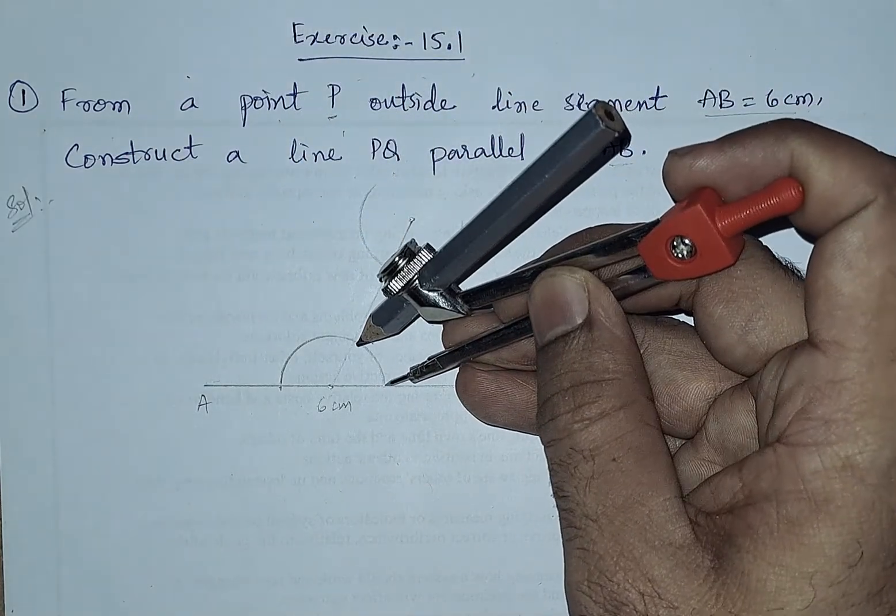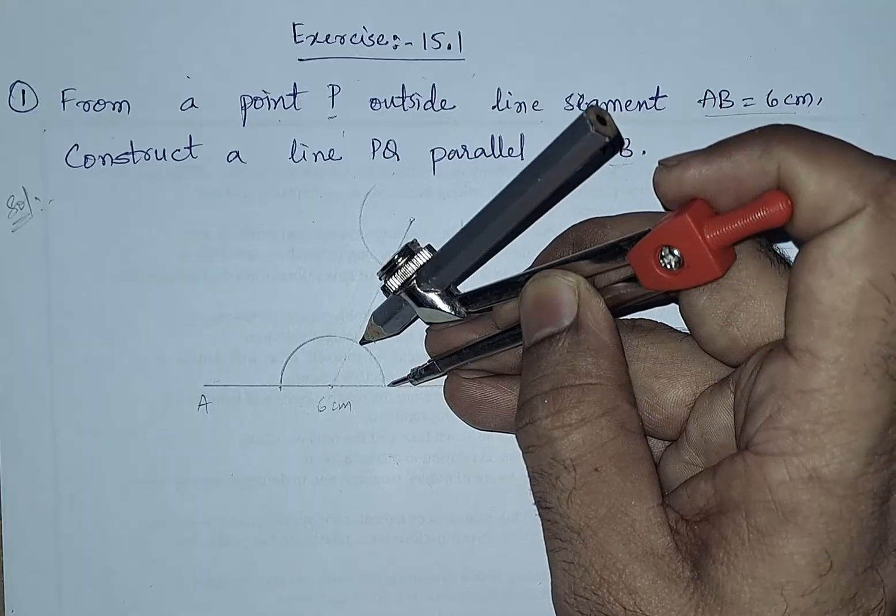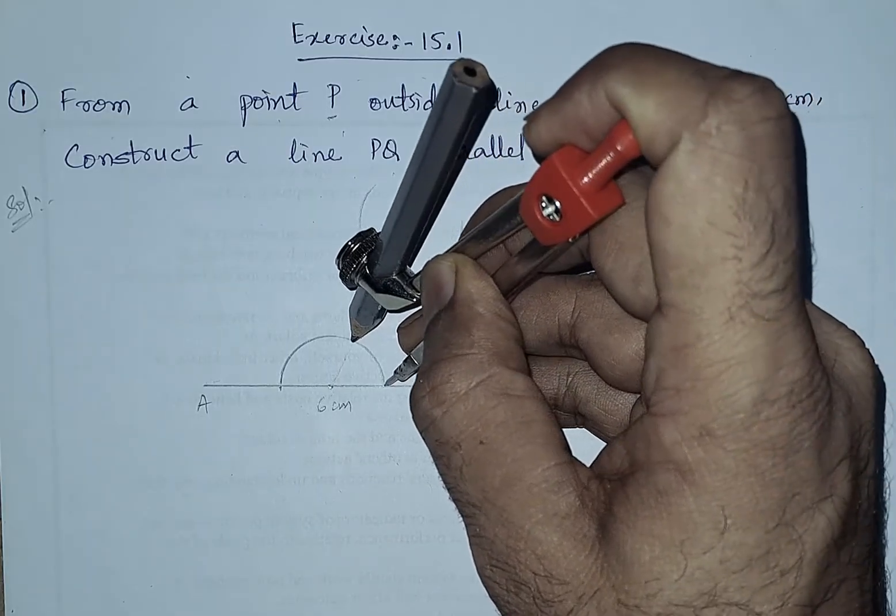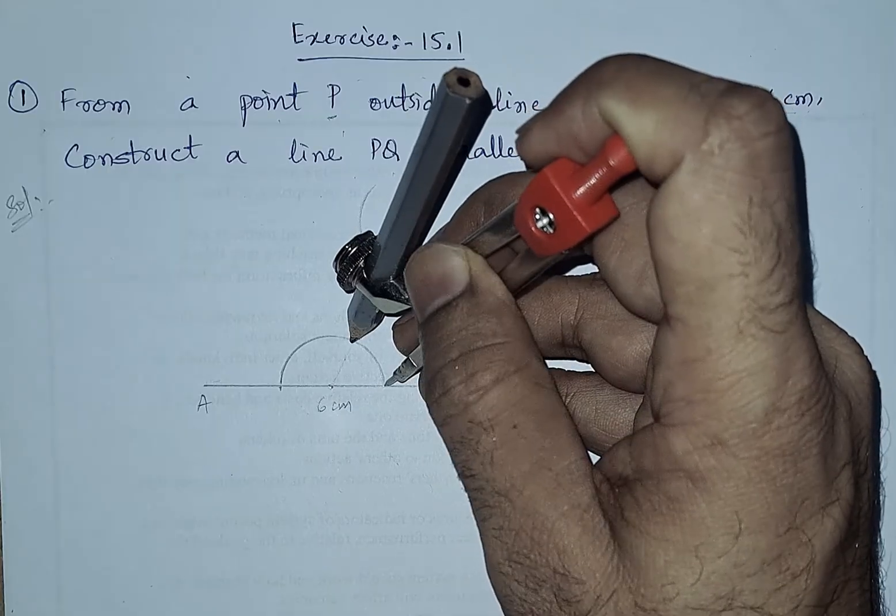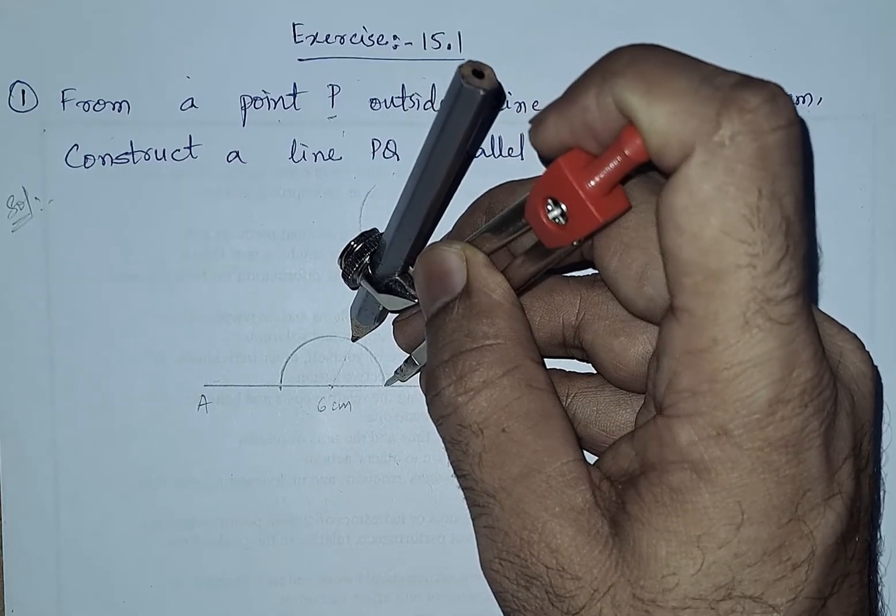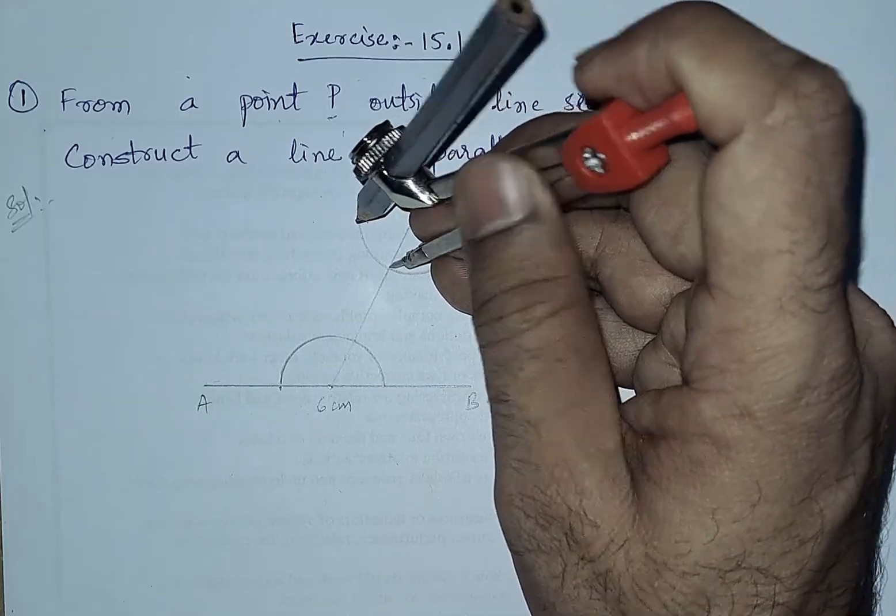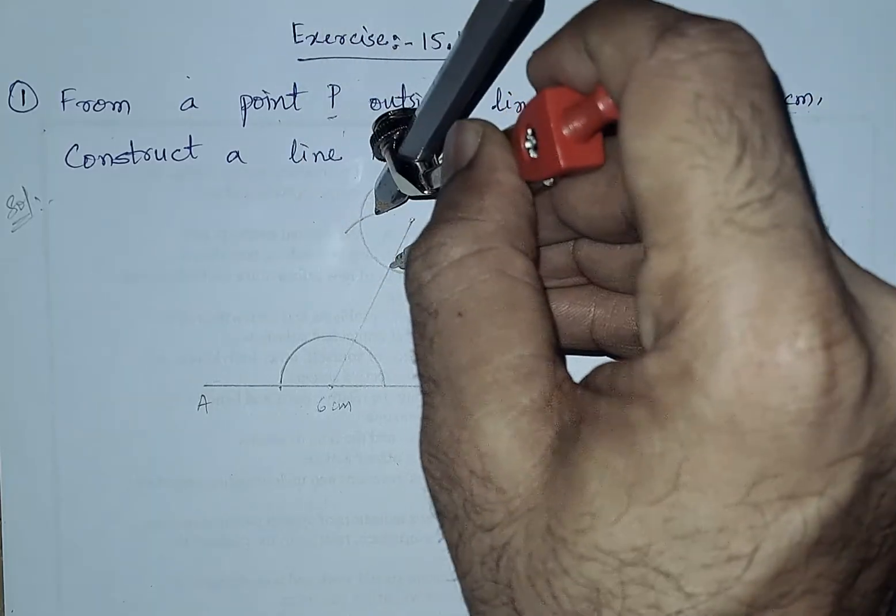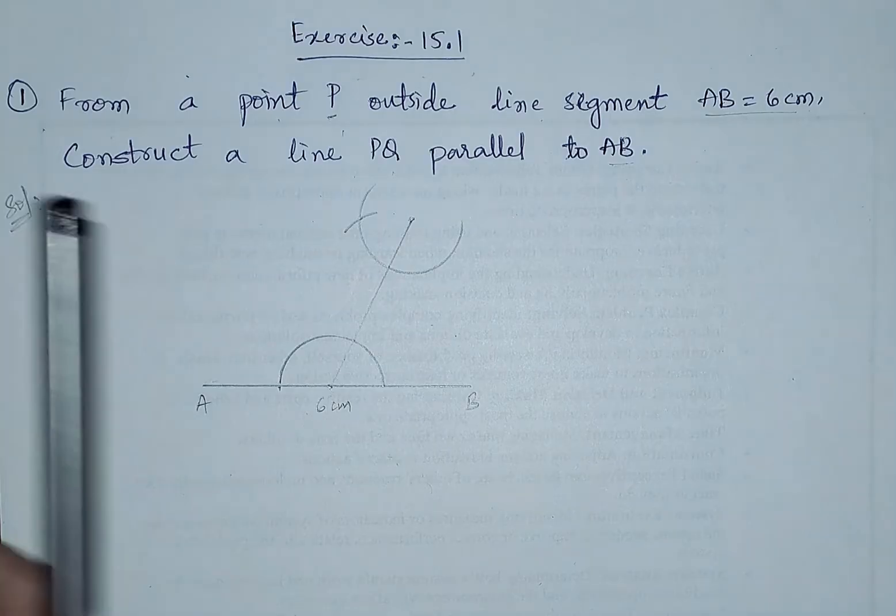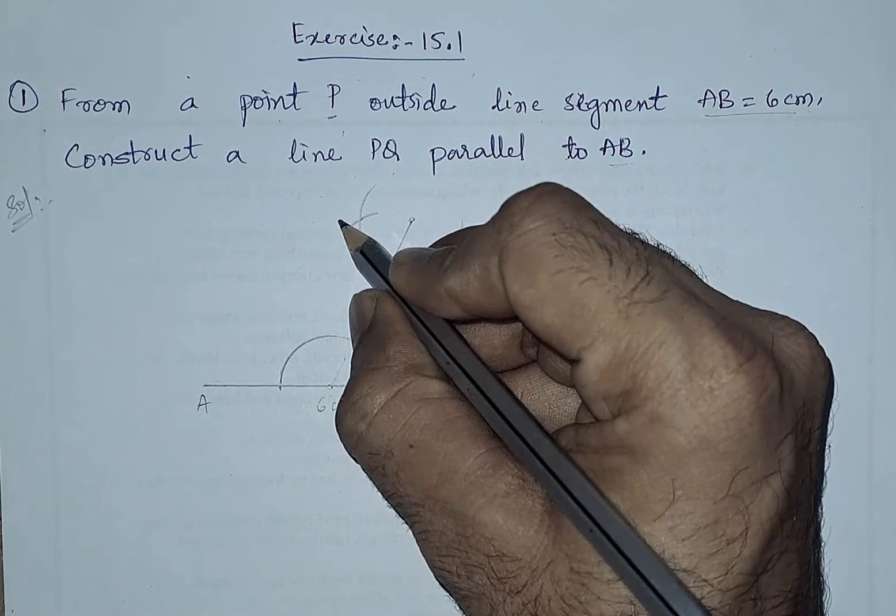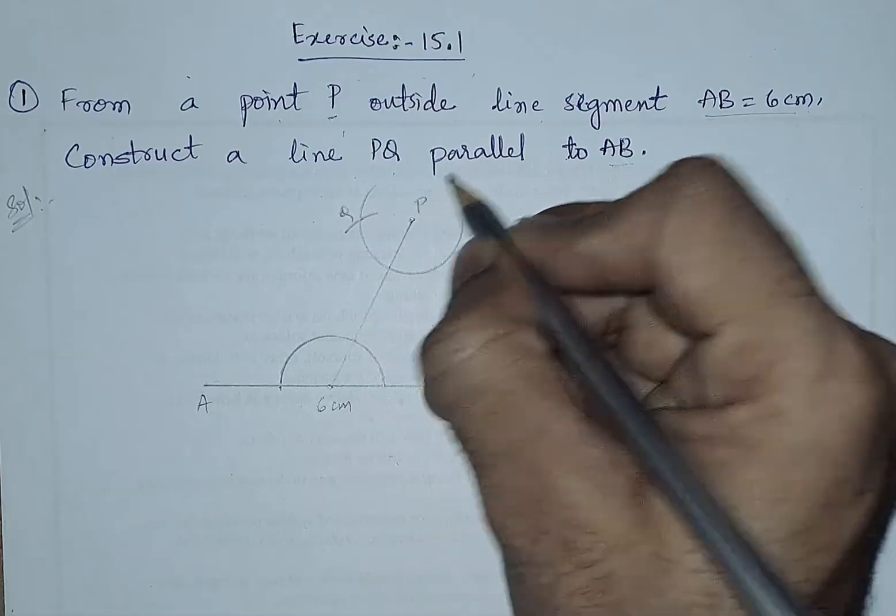Now from this point we have to keep the steel needle here and take the point where this arc is intersecting the line, measure it, and from this point draw an arc. Now we can see that this arc is cutting the previous arc, so let this be Q and this our point is P.